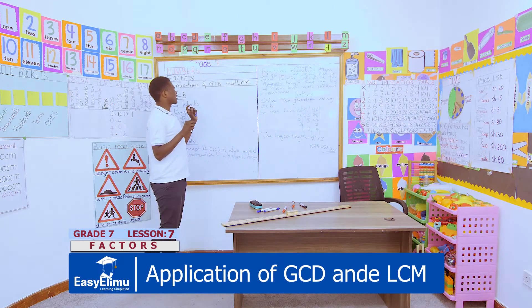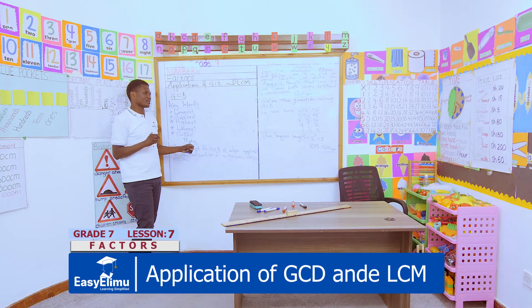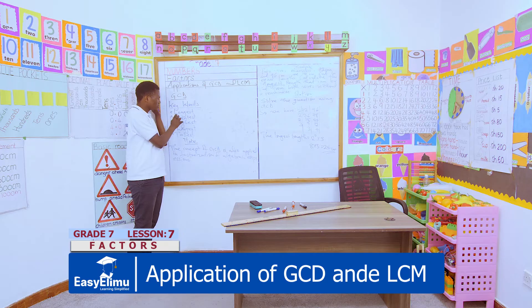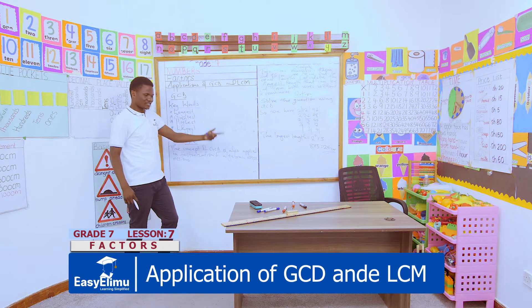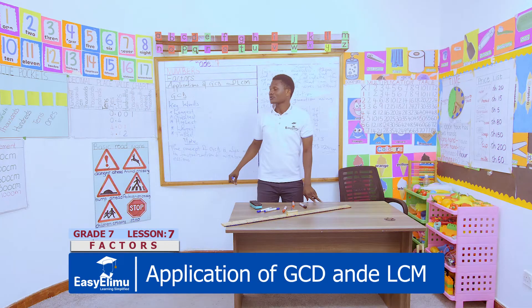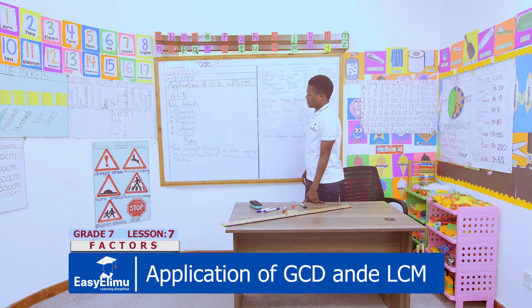As far as the application of GCD is concerned, just look at the following keywords in the equation. The moment you see 'longest,' 'greatest,' 'highest,' 'largest,' 'tallest,' or 'fastest,' then you should know that you're supposed to solve using GCD.